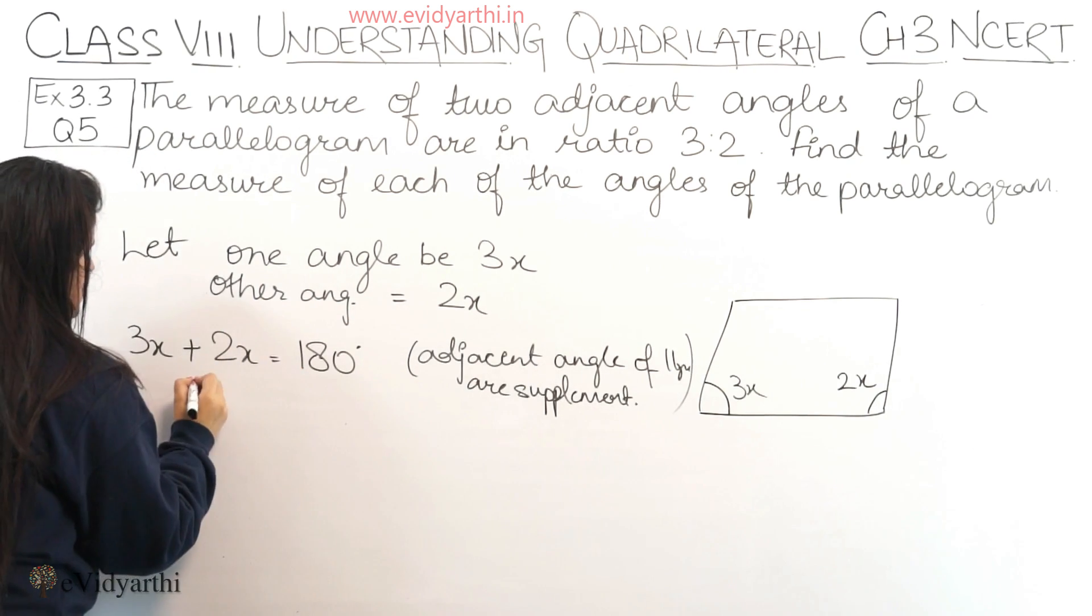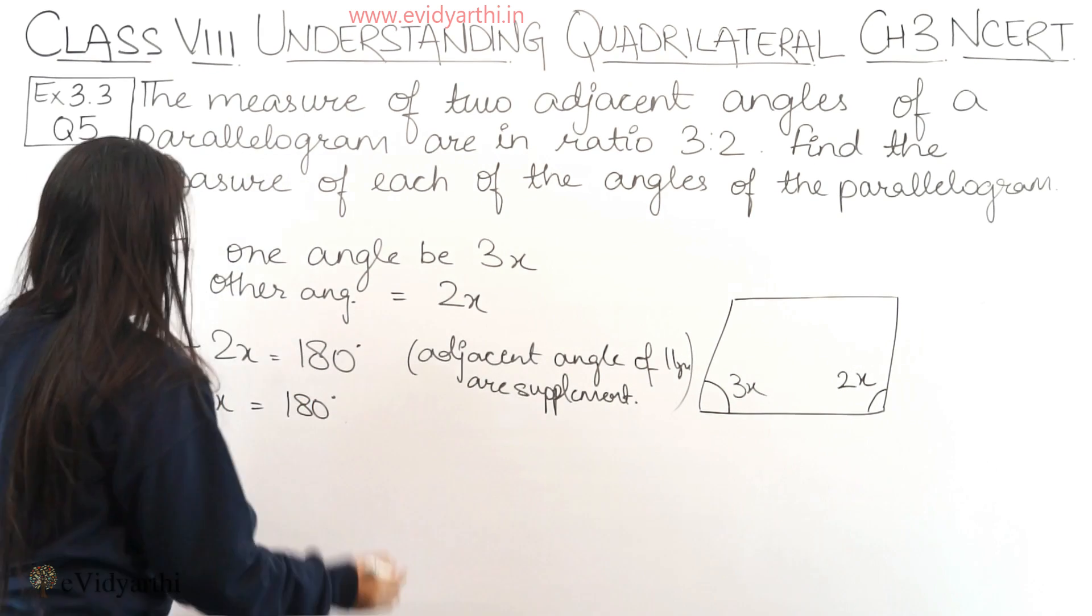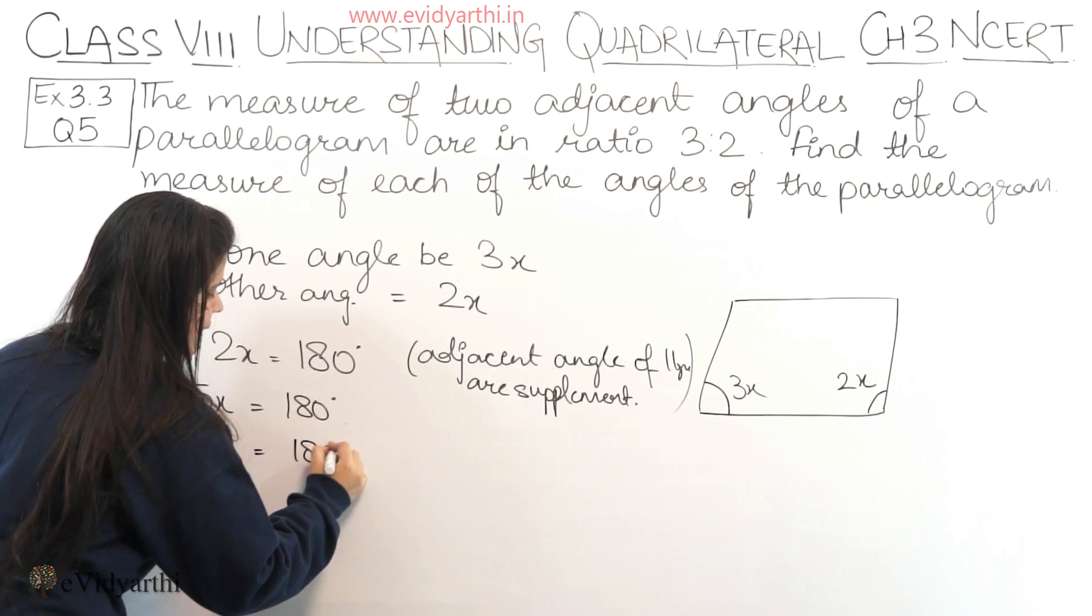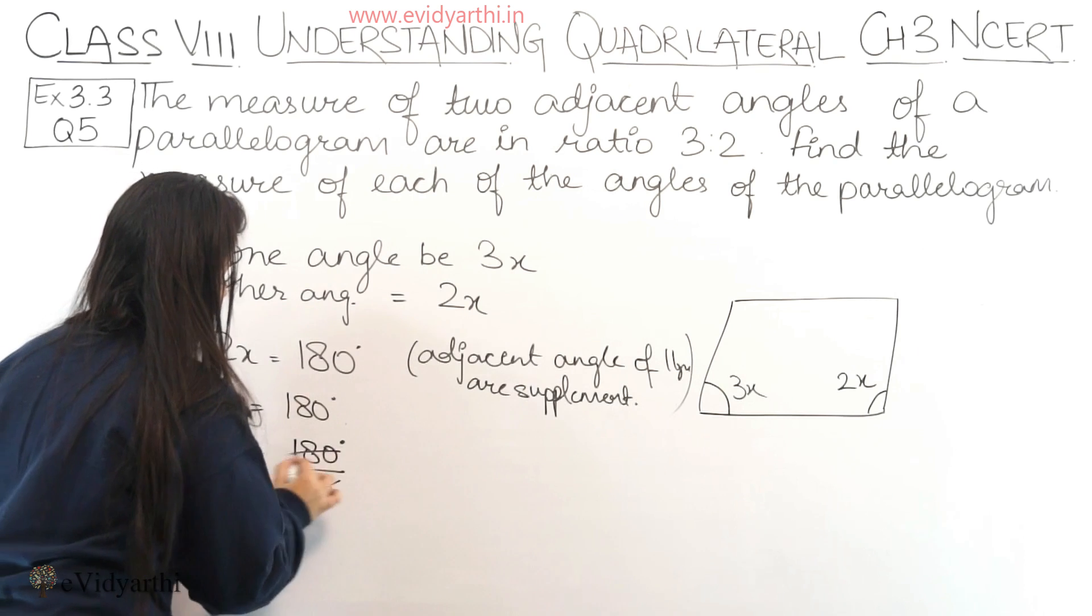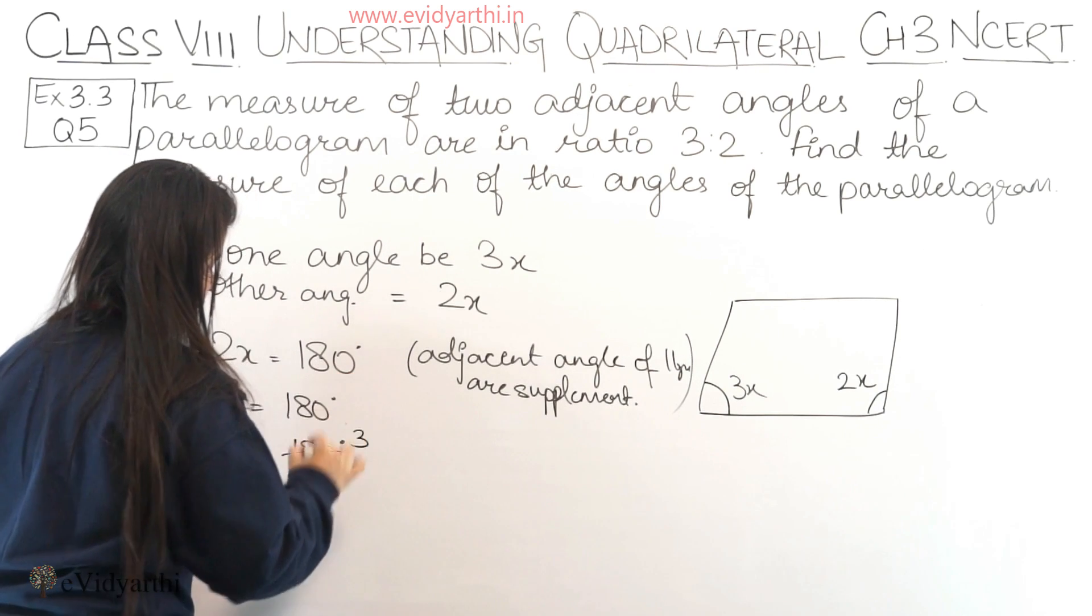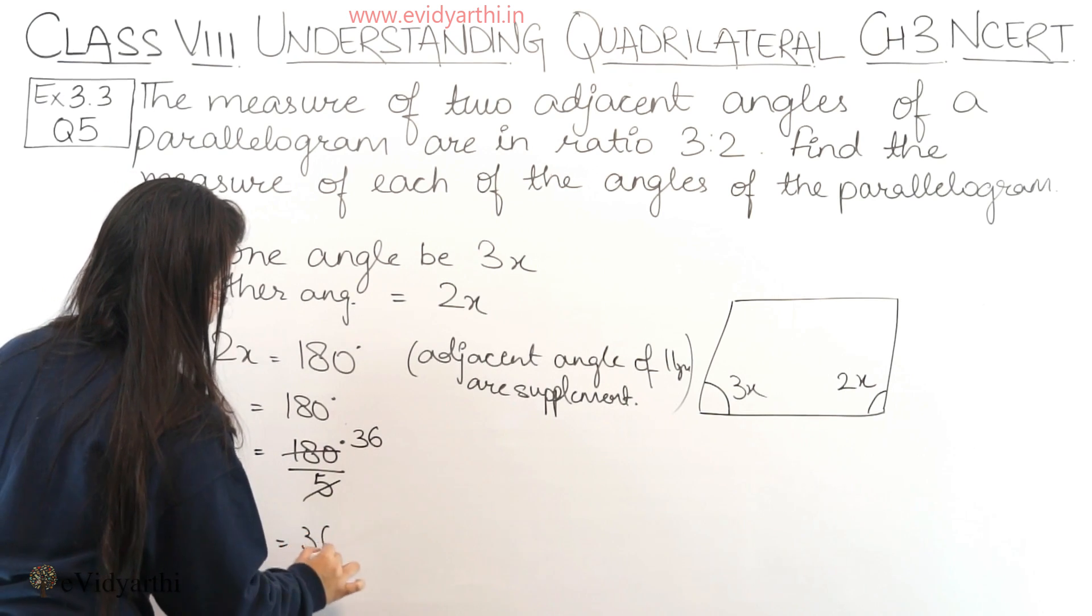Now 3 plus 2 is 5x equals to 180 degrees. So x equals to 180 degrees upon 5. 5 divides into 180: 5 into 3 is 15 and 30 will be 6. So x equals 36 degrees.